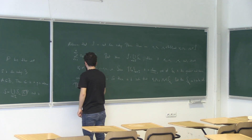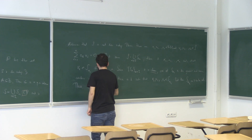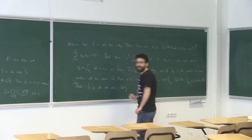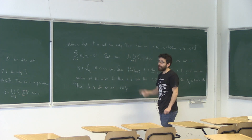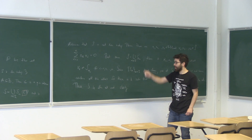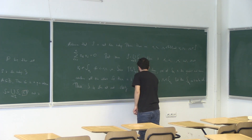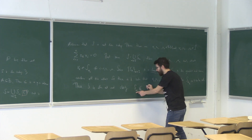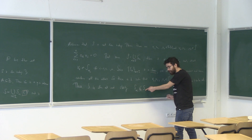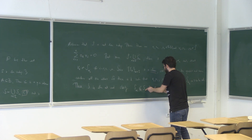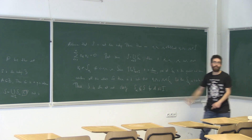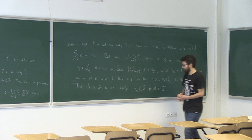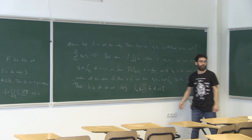Thus S is linearly independent, and clearly now it's in P, so I can compare S with the S_alpha's. By definition, S_alpha is a subset of S, so it is less than or equal to S. So this is an upper bound. I've got a chain and I've found an upper bound for this chain.